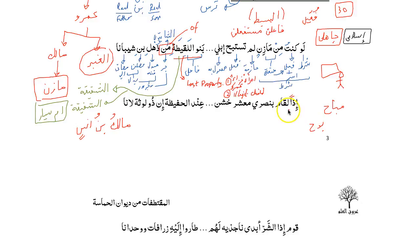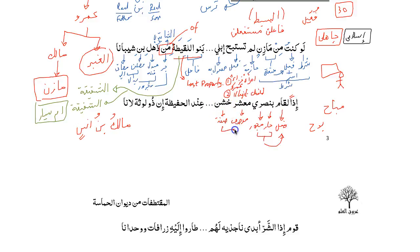لَقَامَ بِنَصْرِي — the لَام here is for تأكيد. قَامَ is the فِعْل, and بِنَصْرِي is جَار ومَجْرُور. نَصْرِي is مَجْرُور and it is مُضَاف، مُضَاف إِلَيَّ. مَأْشَرٌ is the مَوْصُوف, and خُشُنٌ is the صِفَة — together they form the فَاعِل. عِنْدَ is ظَرْف مُضَاف, and الحَفِيظَة is مُضَاف إِلَيْهِ. So مُضَاف plus مُضَاف إِلَيْهِ becomes the ظَرْف متعلق to قَامَ.